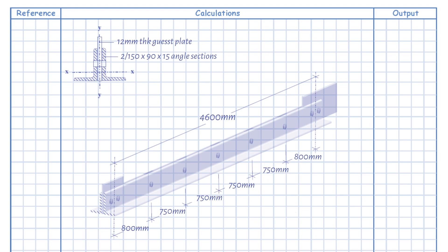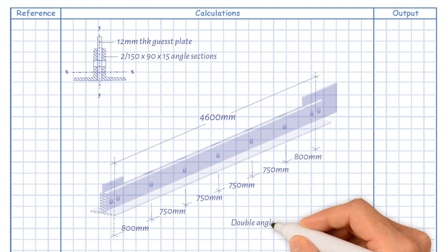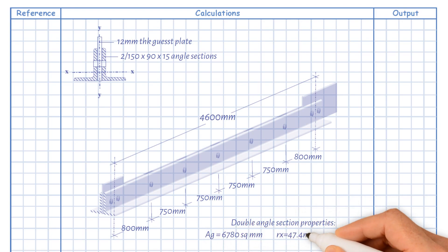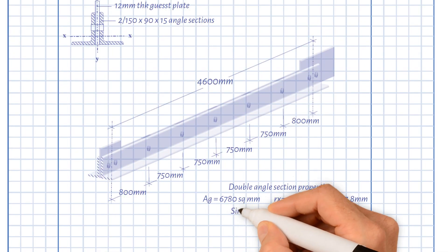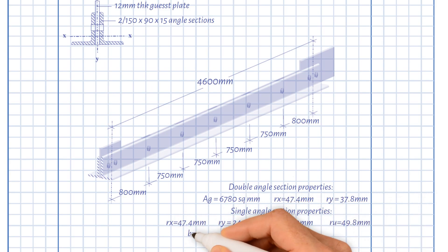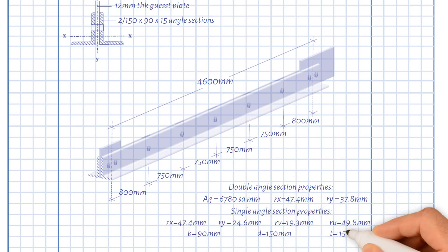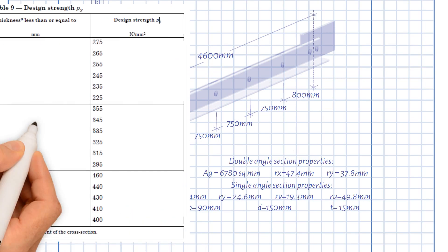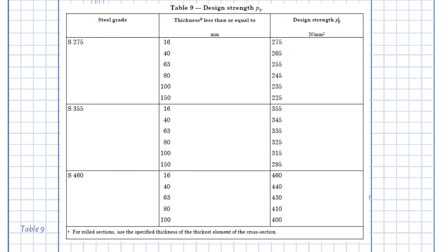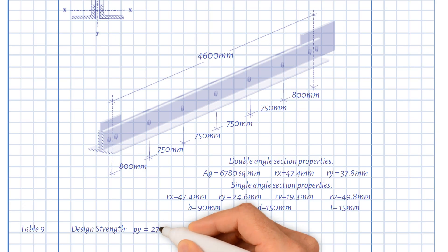For the 250 by 90 by 15 double angle section, we have the following properties, and for the single angle section we have the following properties. First of all, we need to check the section is non-slender. For thickness less than or equal to 16 millimetres, for S275 steel grade, the design strength equals 275 N/mm².